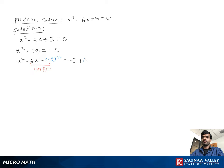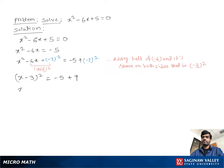Now x squared minus 6x plus negative 3 squared is in the form of x minus 3 all squared. So we write x minus 3 all squared equal to negative 5 plus 9, which gives x minus 3 all squared equal to 4.